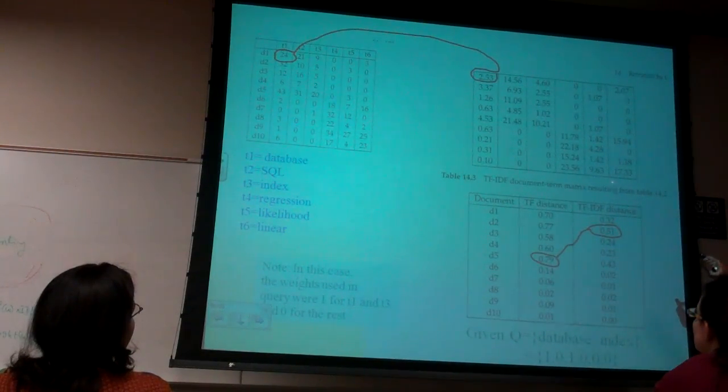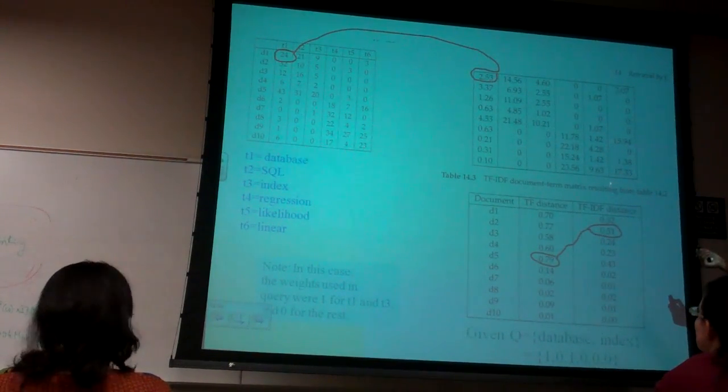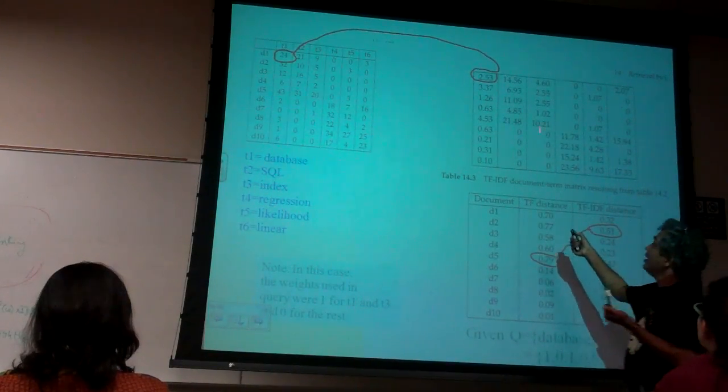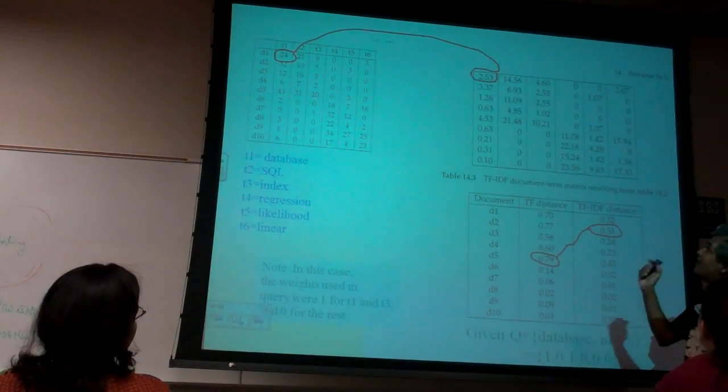So notice that, obviously, this is different. These numbers are different. Not only are the numbers different, there is no clear-cut evidence as to, like for example, the 24 became 2.53...